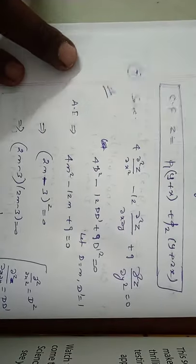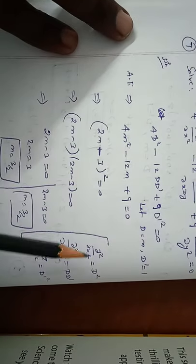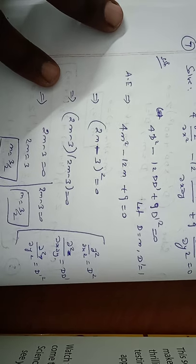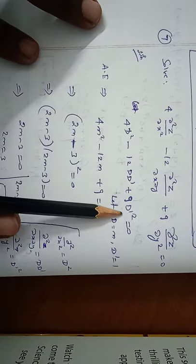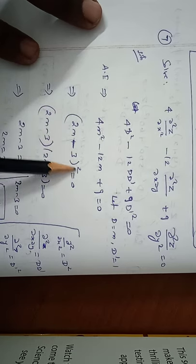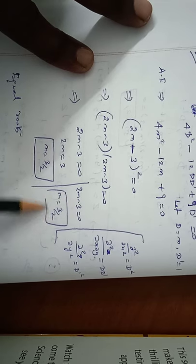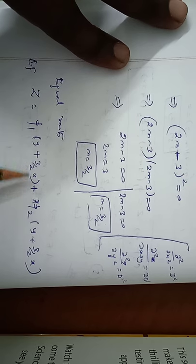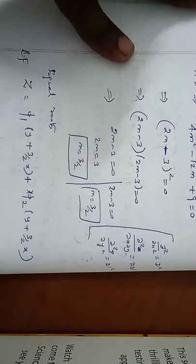Problem 7: solve 4(∂²z/∂x²) - 12(∂²z/∂x∂y) + 9(∂²z/∂y²) = 0. Converting: ∂²/∂x² = D², ∂²/∂x∂y = DD', ∂²/∂y² = D'². This becomes (4D² - 12DD' + 9D'²)z = 0. Let D = m, D' = 1: 4m² - 12m + 9 = 0, which factors as (2m - 3)² = 0. So m = 3/2, repeated twice. The complementary function is z = φ₁(y + 3x/2) + x·φ₂(y + 3x/2).